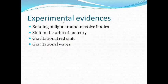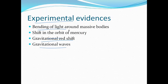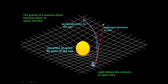The special and general theories of relativity have a lot of experimental evidence. Some of them are: the bending of light around a massive body, the shift in the orbit of Mercury, gravitational redshift, and gravitational waves. As seen in the figure, light coming from a star is bent through spacetime because the spacetime itself is bent. Just as a ball rolling through a curved space will follow that curve, light passing by a massive object bends through the curved space. Since photons have negligible mass, this bending could be accounted for only through the general theory of relativity.